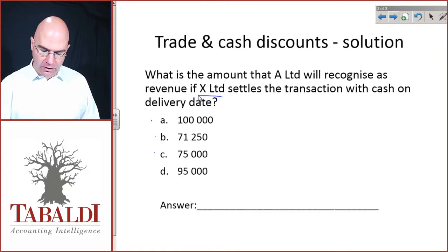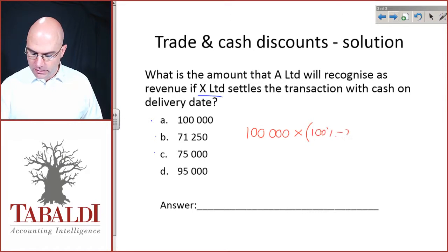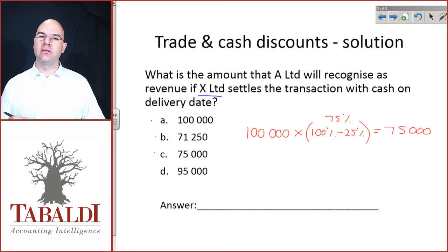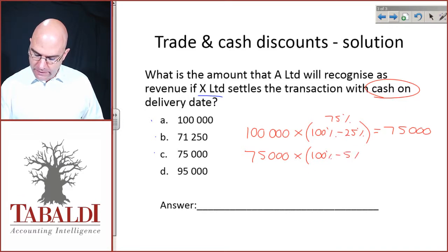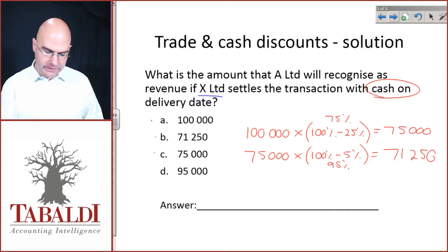Assuming you've done the calculation, here is how it works. We start with the invoice amount of $100,000. X Limited received a 25% trade discount no matter what, so we calculate 100,000 times 75%, which gives us $75,000. Now, since X Limited settled with cash on delivery, they get a further 5% cash discount. So we take 75,000 times 95%, which gives us $71,250. That is answer B — $71,250.